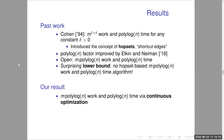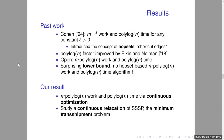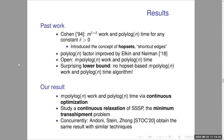Our result bypasses this barrier and obtains a polylog, M·polylog work and polylog time algorithm via a new approach: continuous optimization. This has seen a lot of success recently in problems like max flow in the sequential setting. Similar to max flow, we study a continuous relaxation of the problem — in this case, the minimum transshipment problem. Concurrently, Andoni, Stein, and Jung have obtained a similar result with similar techniques; they also relax to the minimum transshipment problem.